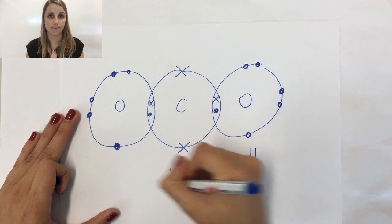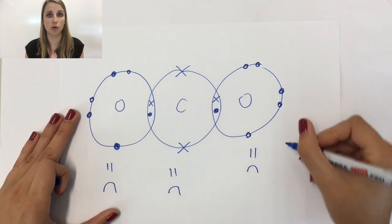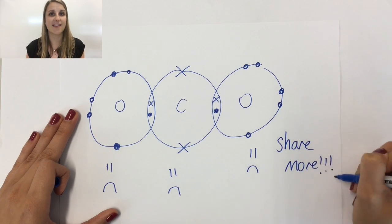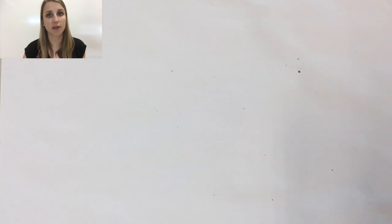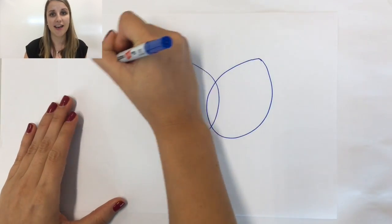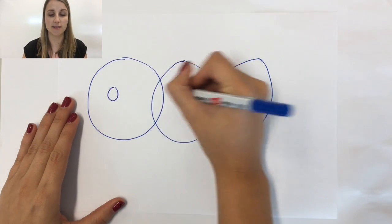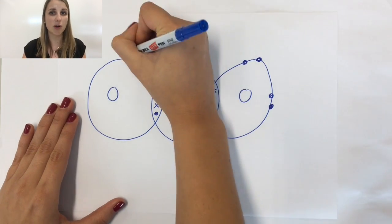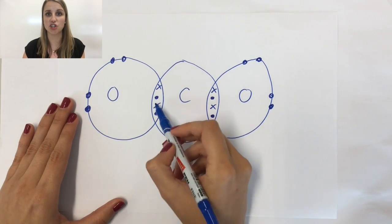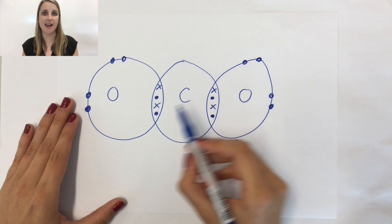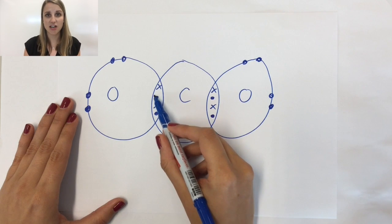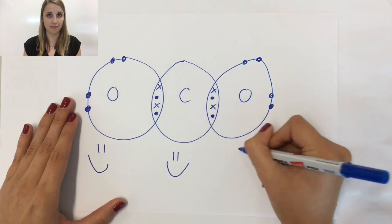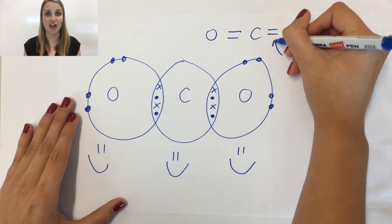None of these atoms have managed to get a full outer shell by sharing electrons, which is a really big problem. So how do we solve this? The way we solve it is we form what we call multiple bonds — normally a double or a triple bond — which essentially just means that they need to share more electrons. I'm going to put an extra dot and an extra cross in each one of these shared regions. If I put extra ones in there, I have to take them from the outer shells. What we've now got is eight electrons on the outer shell of the oxygen, eight on the carbon, and eight on the other oxygen. So everything's now happy, and this is the structure of carbon dioxide.